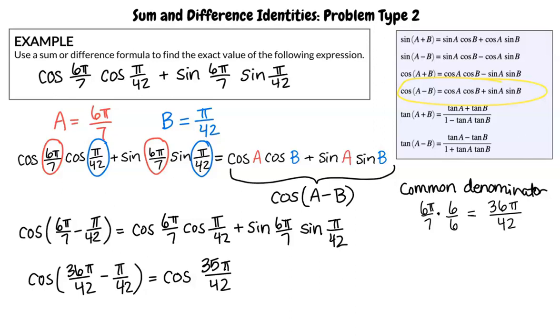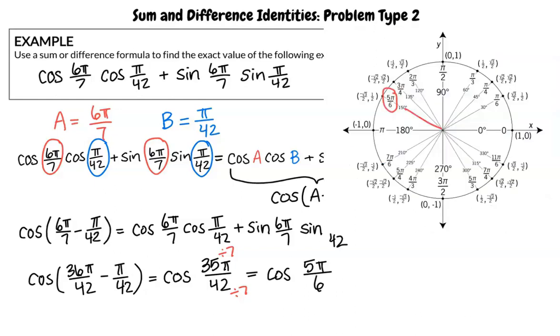So how do we simplify this more? The fraction 35π/42 can be reduced by dividing both 35 and 42 by 7, giving us 5π/6. We can see that 5π/6 is a special angle on the unit circle, so we can now find the exact answer of cos(5π/6), which is -√3/2.